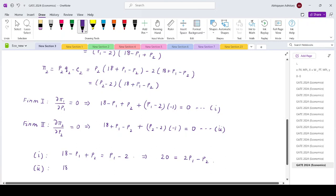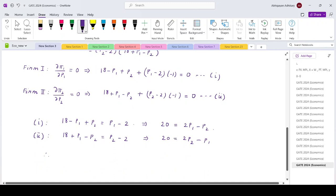Equation 2 gives us 18 plus P1 minus P2 equals P2 minus 2. So that means 20 equals 2P2 minus P1. Combining these, since the LHS is the same, 2P1 minus P2 equals 2P2 minus P1. Therefore 3P1 equals 3P2, or at optimal P1 star equals P2 star.